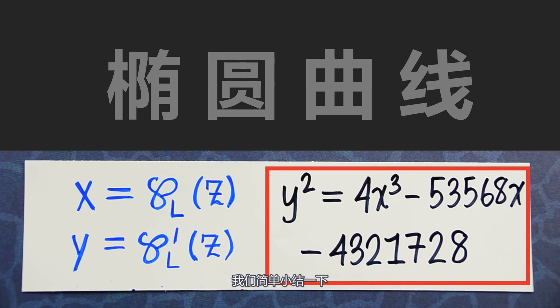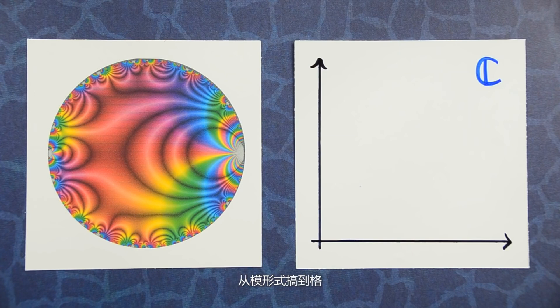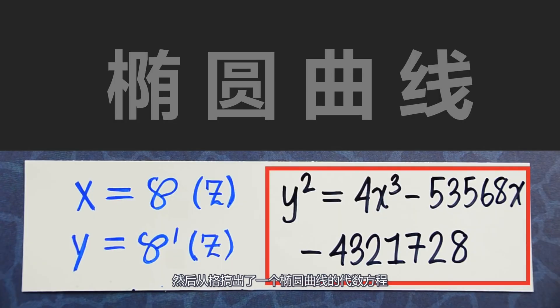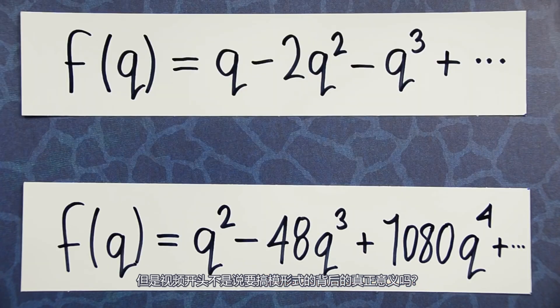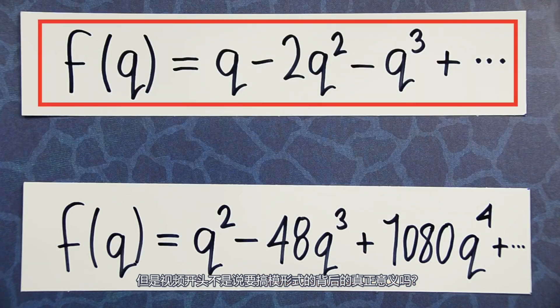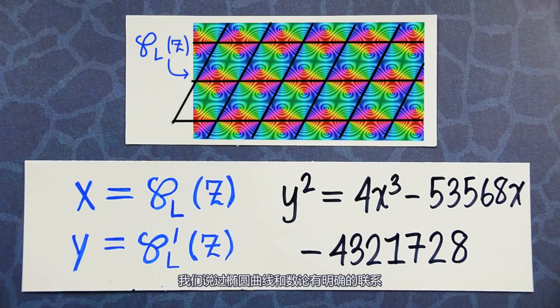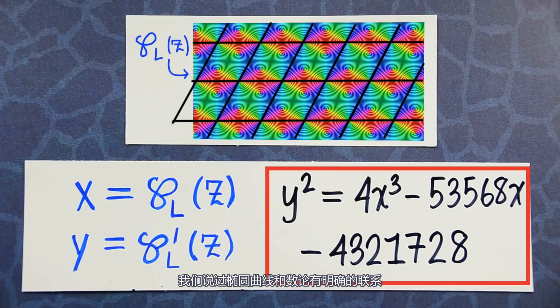Let's summarize what we've done so far. We started off with a modular form, from it we cooked up a lattice, and from that lattice we produced an elliptic curve. But we started off the video wanting to know: what is the hidden meaning of the coefficients of this modular form? The point we're leading up to is that they are exactly reflected in the number theory of this elliptic curve.